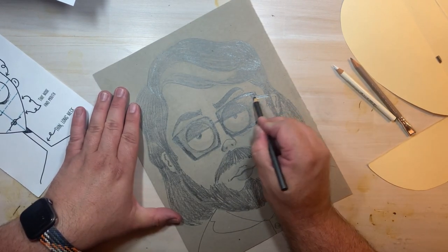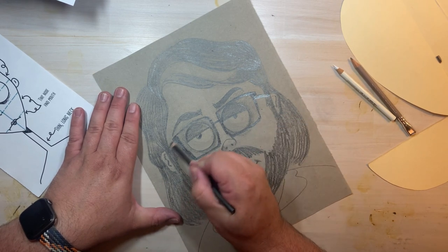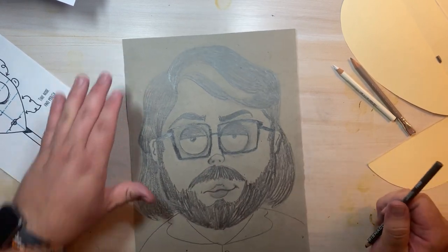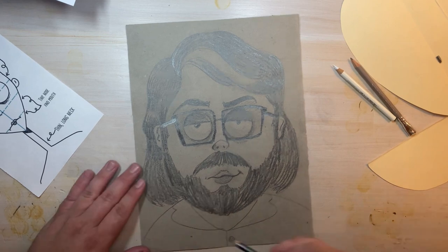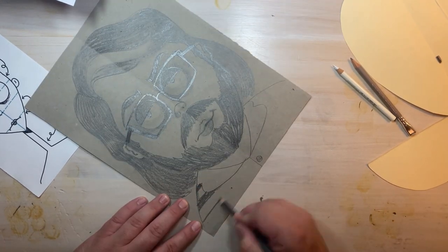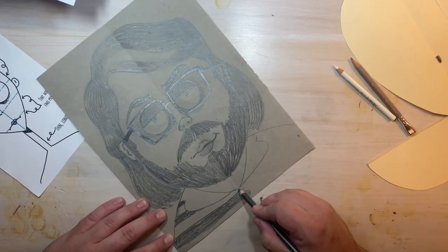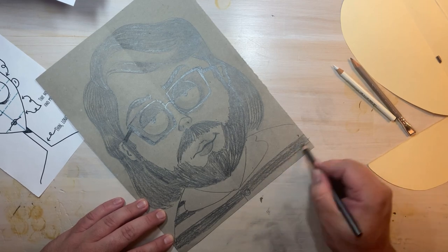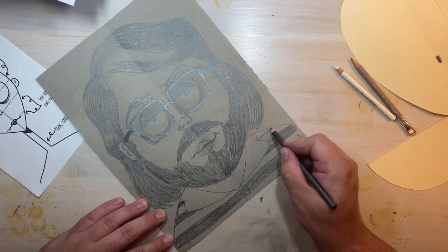Once you finish the details of the face you can turn your attention to the clothing that you're wearing. Tim Burton typically tries to squeeze in at least one character in a film wearing black and white stripes. That might be a detail you want.